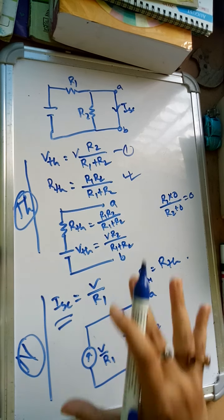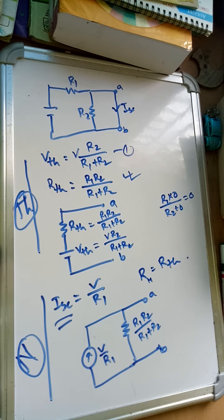So applying these two you can find out the problem. So if in exam this comes, you can solve it for the simplest potential divider bias. Thank you.